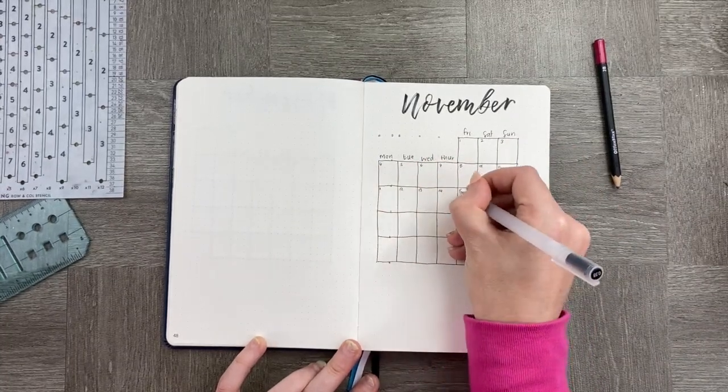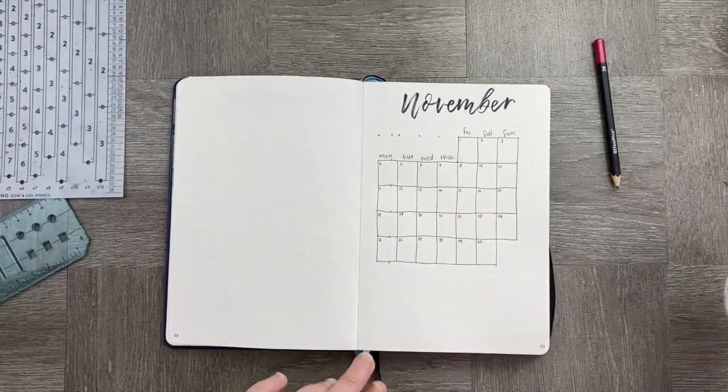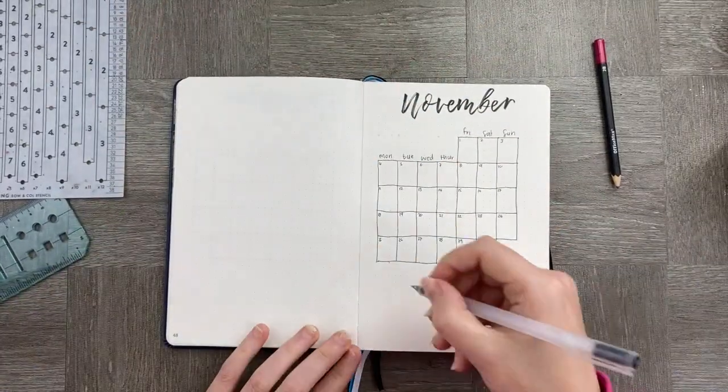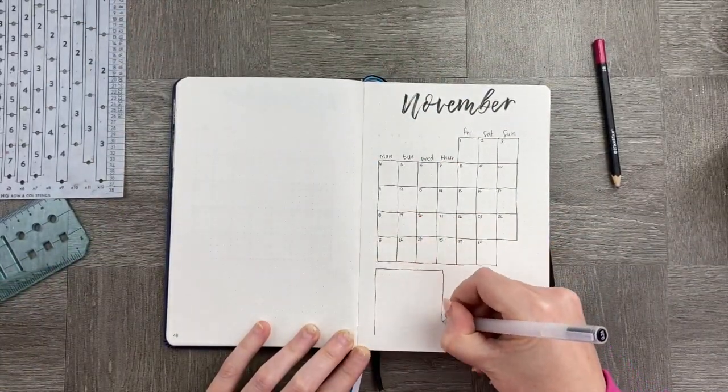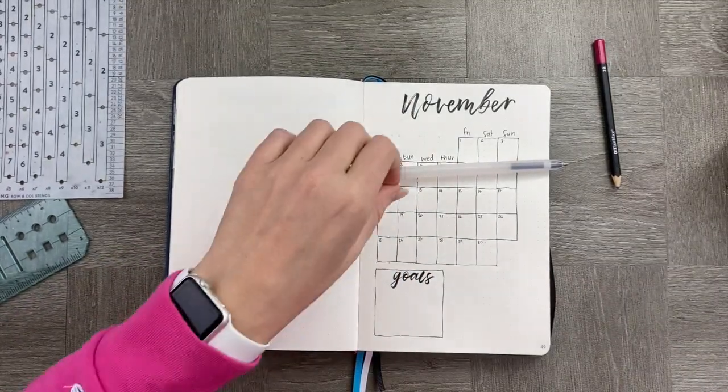I'm adding November in some hand lettering and obviously the little dates of the month. Originally when I did this, I actually messed it up the first time and I started on Saturday, so I just redrew it real quick. It wasn't a big deal. You could probably see it on the other page just ghosting through there.